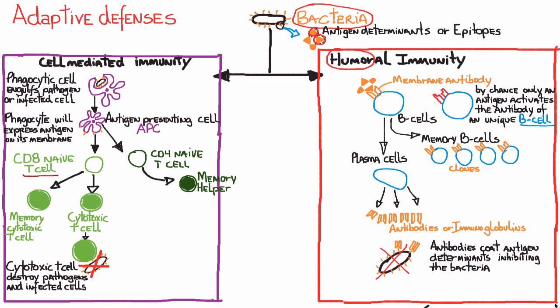Cytotoxic T cells destroy the pathogen directly or can destroy an infected cell in your body that got infected with a virus. On the other sub-branch of cell-mediated immunity, the CD4 naive T cell becomes a memory helper T cell. They get the name 'helper' because they assist in the response. The effector helper T cells help via chemical stimulation, which goes beyond the scope of this overview.